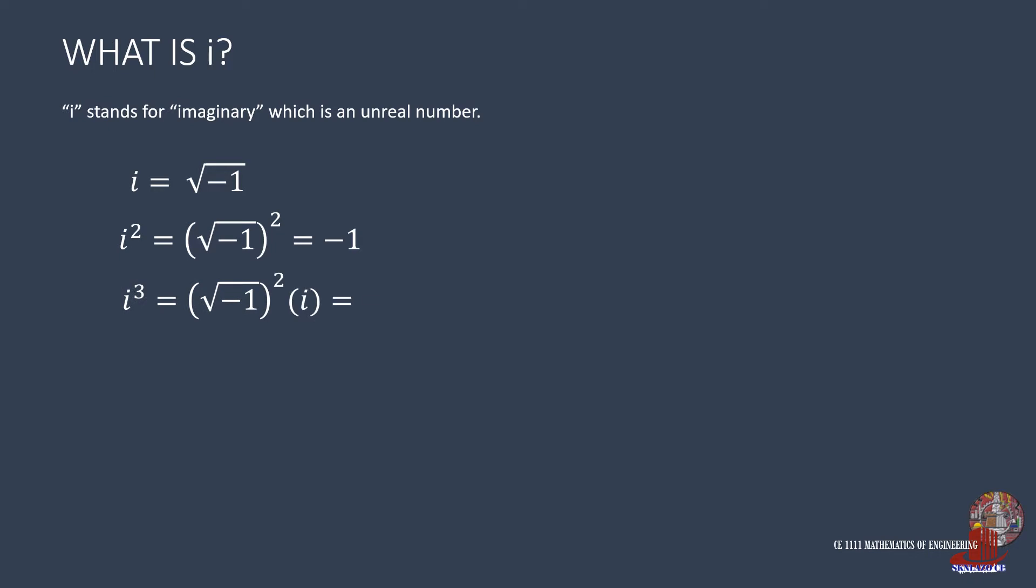i cubed is expanded as multiplying the square root of negative 1 by itself three times, where we can take a pair out of the radical and make it as negative 1, then turning the whole i cubed as negative i. Similarly, i raised to 4 is then negative 1 times negative 1 or positive 1.